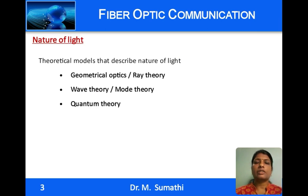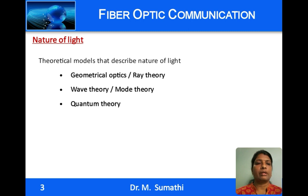The models of light description are Geometric Optics or Ray Theory, Wave Theory or Mode Theory, and Quantum Theory. Ray Theory makes use of light rays to explain the phenomena of reflection and refraction, but fails to explain interference and diffraction, which were detailed by wave theory. Ray Theory developed over the years can be modeled using wave theory. Quantum Theory explains the phenomena of emission and absorption of light.